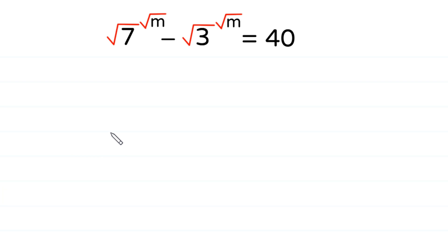Welcome to how to solve this radical equation. Square root of 7 to the power square root of m, minus square root of 3 to the power square root of m, is equal to 40.